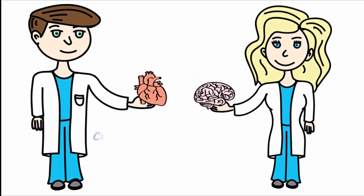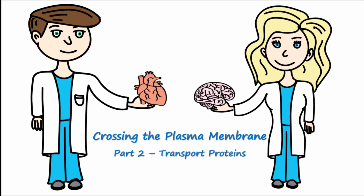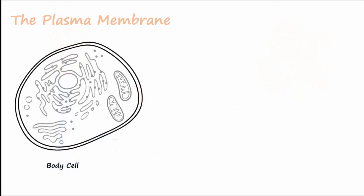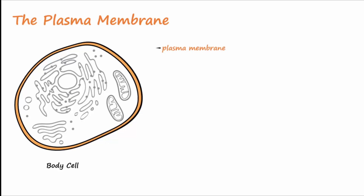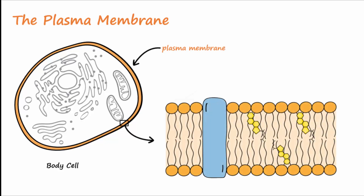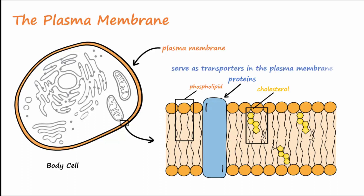Welcome back to part two of crossing the plasma membrane. Remember that a plasma membrane surrounds body cells and this membrane is made up of lipids like phospholipids and cholesterol. The plasma membrane is also made up of proteins which have many functions, one of them being to serve as membrane transporters to move molecules and ions across the membrane.